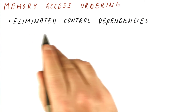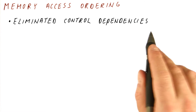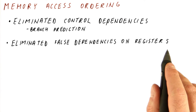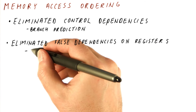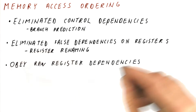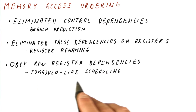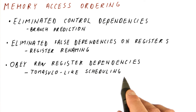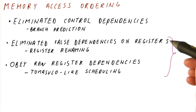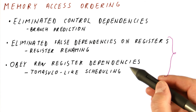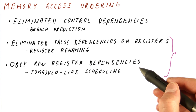So far we have eliminated control dependencies using branch prediction, and eliminated false dependencies on registers — that is, dependencies that go through registers — through register renaming. Next we learned how to obey read-after-write register dependencies, or true dependencies, and we do that through Tomasulo-like scheduling. Instructions wait in reservation stations until their dependencies have been satisfied, and then they can proceed to execution out of program order. Note that the data dependence handling we have done so far is only for register dependencies — that is, when one instruction is producing a value in a register that another is going to be using.